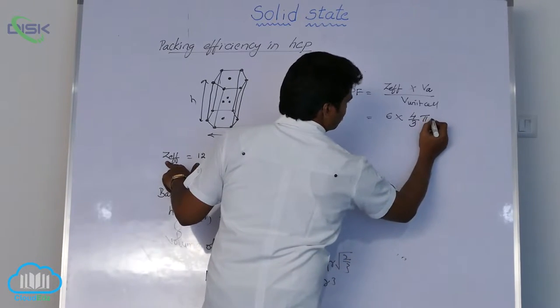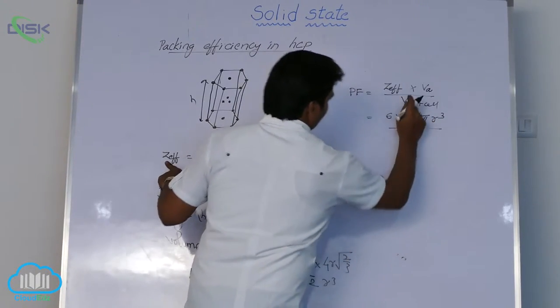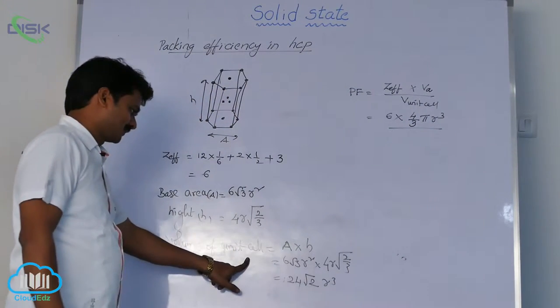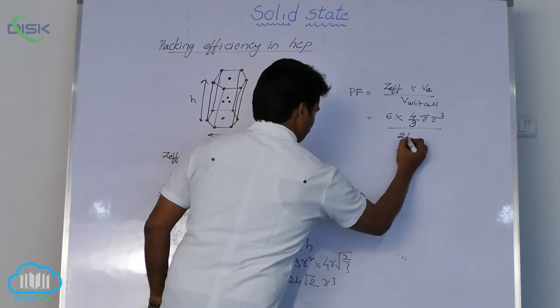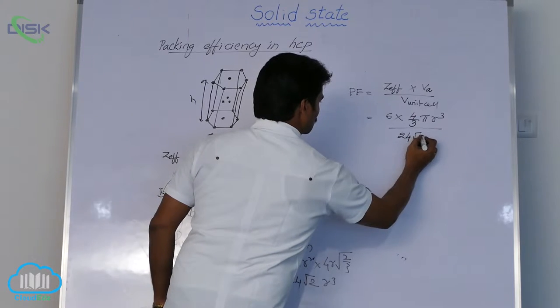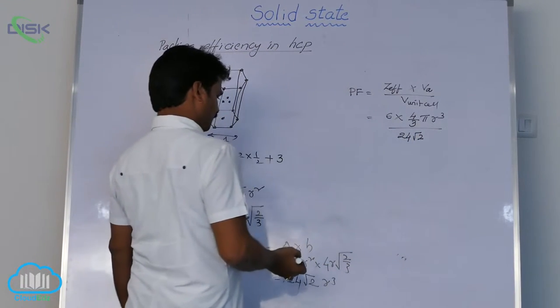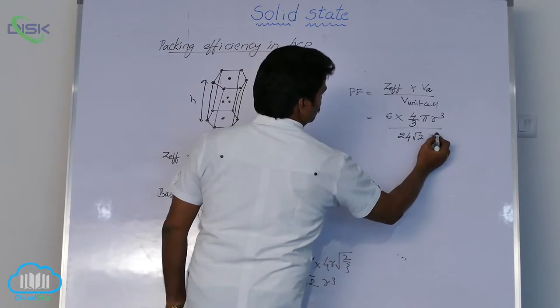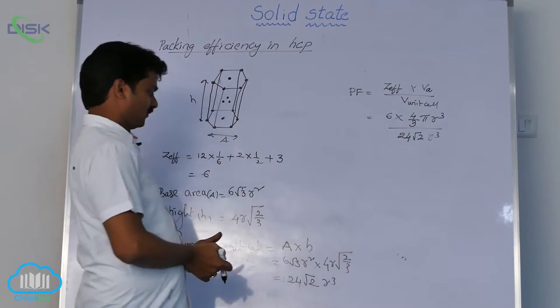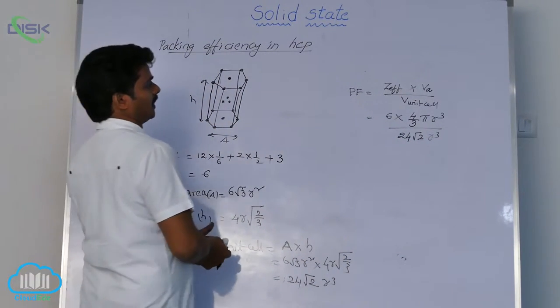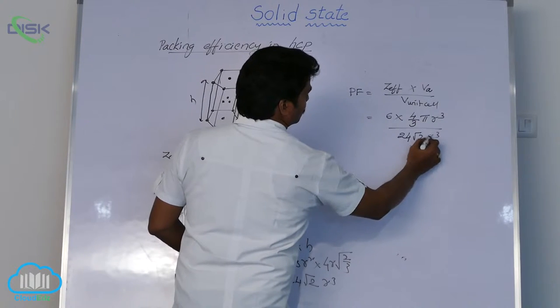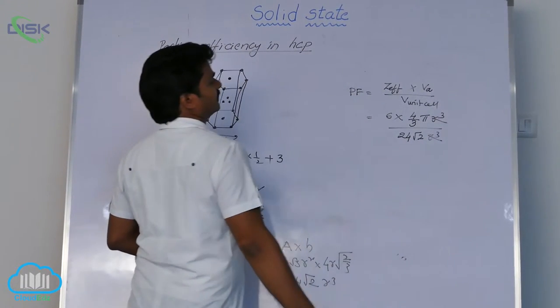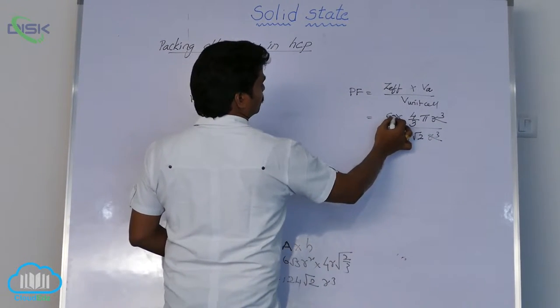Into volume of each atom because atom is considered as a spherical one. That is why its volume is 4 third pi R cube and volume of unit cell is 24 root 2 R cube. Now R cube R cube gets cancelled, 24, 6 into 4 is 24.